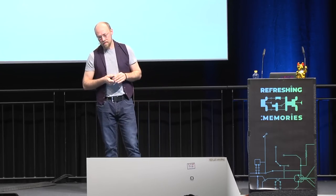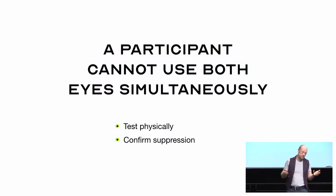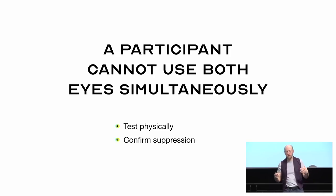The first hypothesis, the main overriding hypothesis is that this does something. We want to falsify that it doesn't do anything. So the first hypothesis is a participant cannot use both eyes simultaneously. So we test usually all of our participants with classic physical techniques with a vision therapist beforehand to see that they can only see with one eye at a time. So with the headset on, first of all, we want to confirm this suppression.